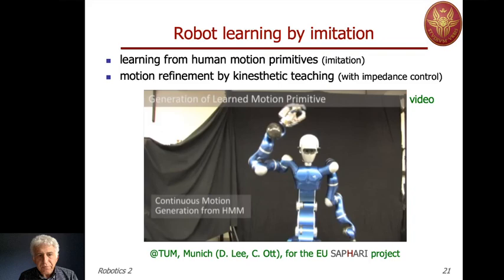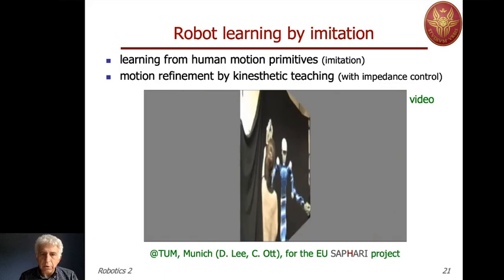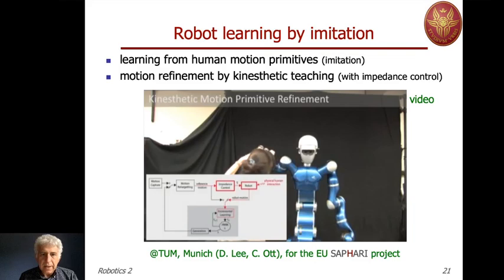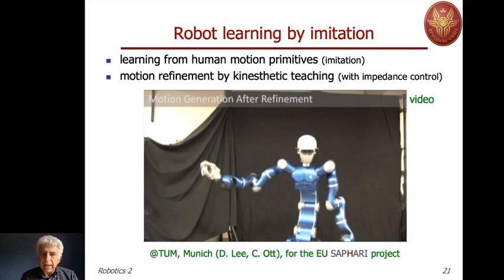The motion generated from acquisition using a hidden Markov model of human motion is replicated and adjusted by the exchange of force between the human and the robot. The result is a smooth final motion obtained after refinement. You can see the learning phase with acquisition from imitation, and then a physical interaction with the human.